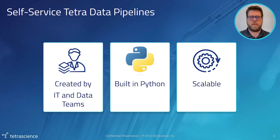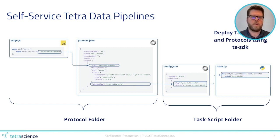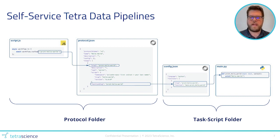All you do is specify the building blocks of Python code that transform the data in certain ways, and then package those steps into a pipeline that follows the transformation steps. To get started, all you really need is four files. For a protocol, you need a JSON file to specify what protocol steps are available, and a JavaScript file to execute those steps in a specific order. And for a task script, you need a JSON file to specify what Python functions are available, and Python files that have Python functions that tell you how things are implemented. Slugs provide the connective tissue that reference across these different files to make sure everything is configured correctly.